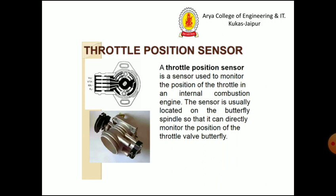The throttle position sensor is a sensor used to monitor the position of the throttle in an internal combustion engine. The sensor is usually located on the butterfly spindle so that it can directly monitor the position of the throttle wall butterfly.